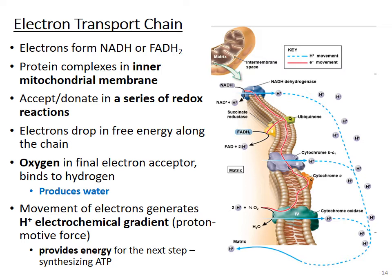Oxygen is used in the electron transport chain as the final electron acceptor. When oxygen binds to hydrogen ions or protons, we get H2O — so that's where water is produced in cellular respiration. This also reduces the hydrogen ion concentration on that side of the membrane, building up an even bigger concentration gradient of hydrogen ions or protons, which then provide the energy for the next step: ATP synthesis.